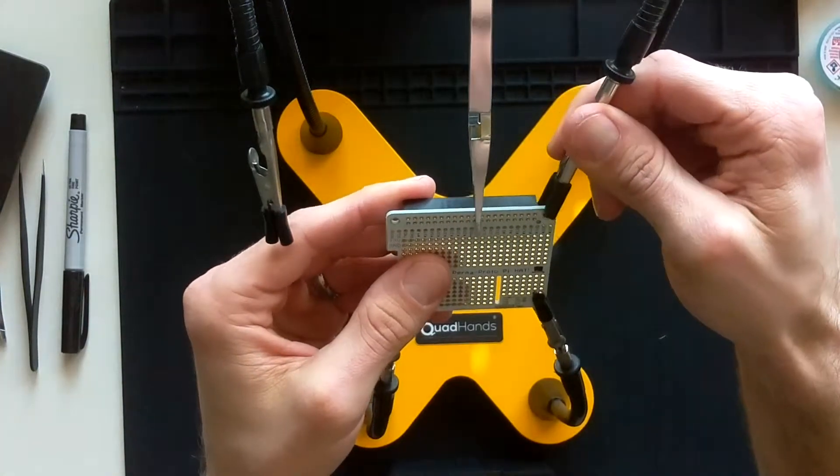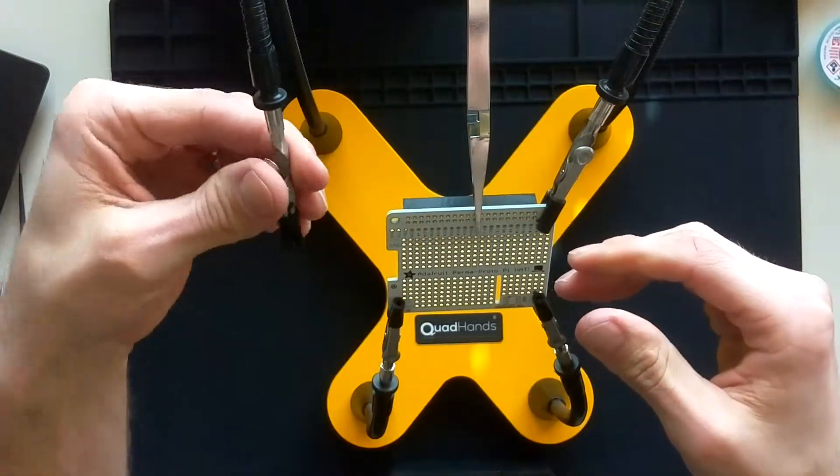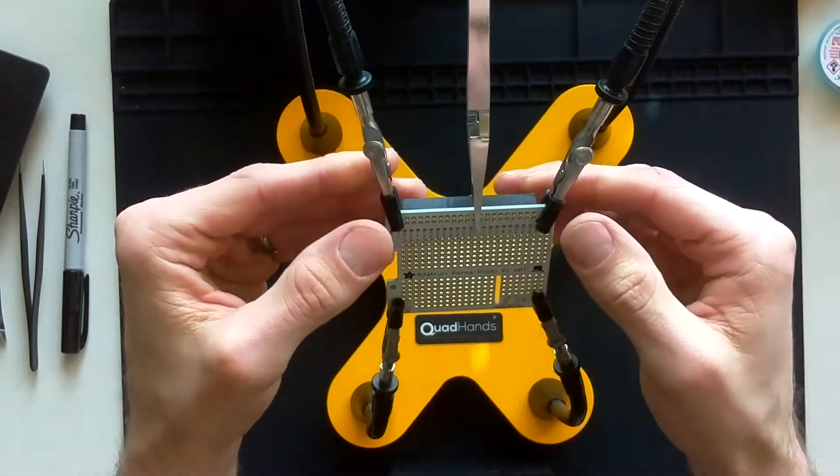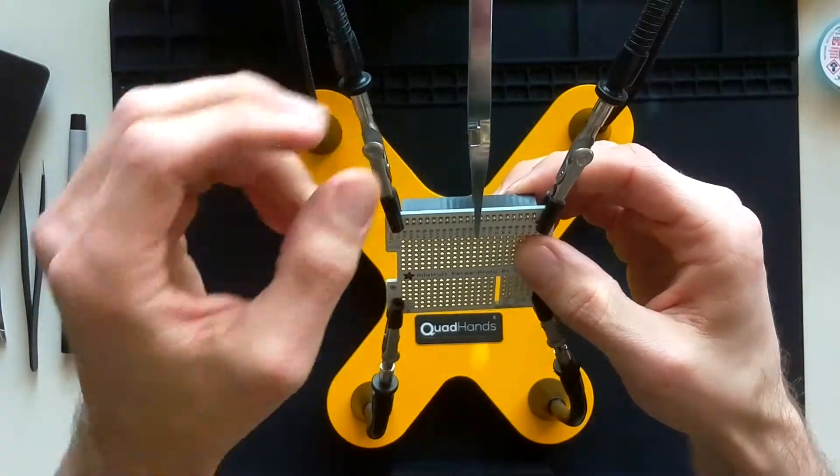The first thing I'm going to do is fit the pins on the header through the board and then clamp the header to the board itself. I'll be using my quad hands here to hold everything in place so I can work on it.